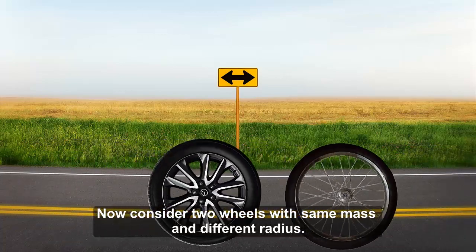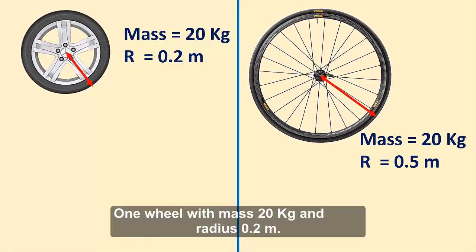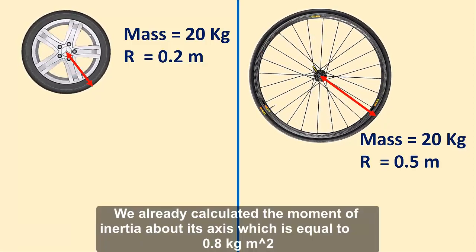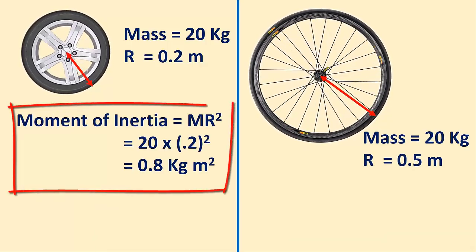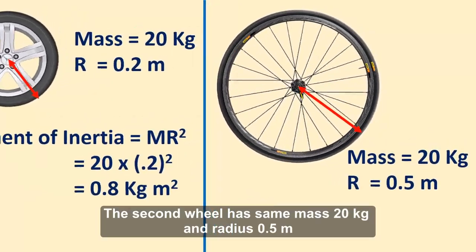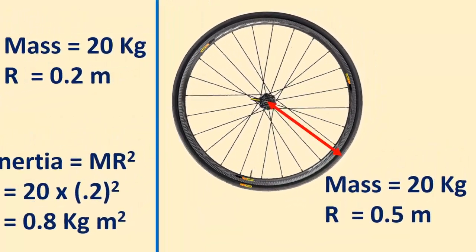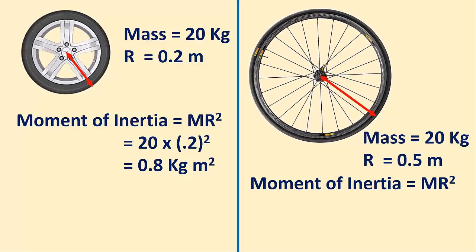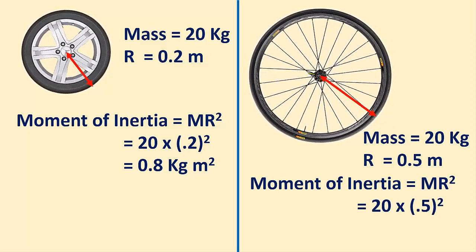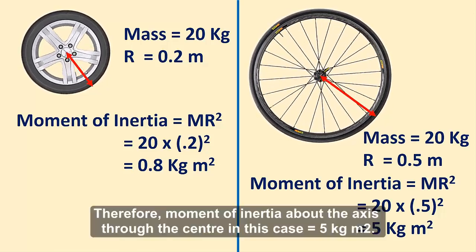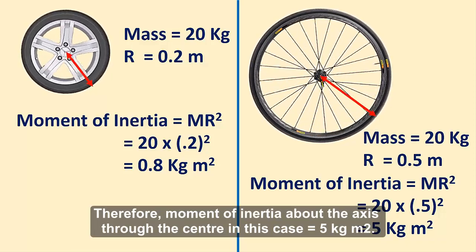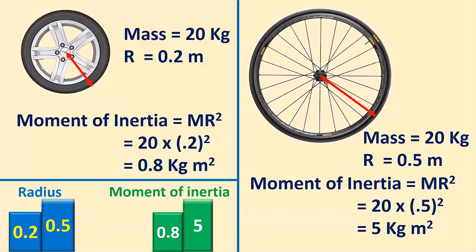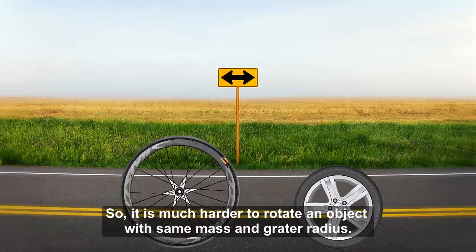Now consider two wheels with same mass and different radius. One wheel with mass 20 kg and radius 0.2 m has a moment of inertia of 0.8 kg·m². The second wheel has the same mass 20 kg and radius 0.5 m. The moment of inertia is mr², which is equal to 20 × 0.5², which equals 5 kg·m². Therefore, the moment of inertia about the axis through the center is 5 kg·m². If the radius increases, the moment of inertia also increases. So it is much harder to rotate an object with the same mass and greater radius.